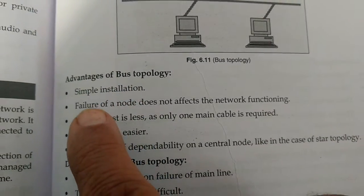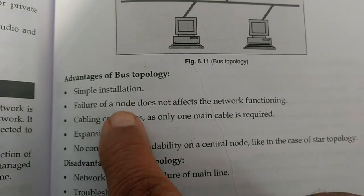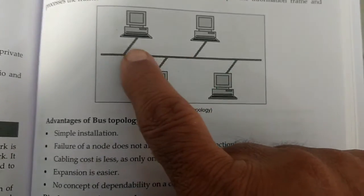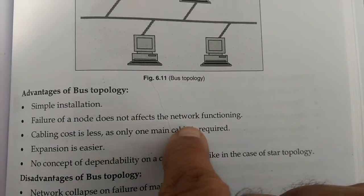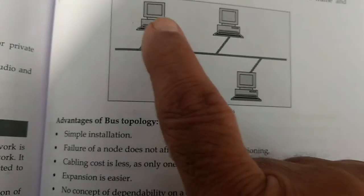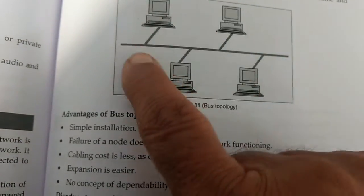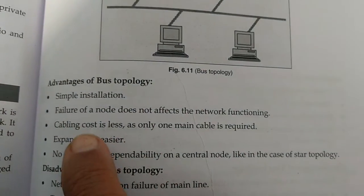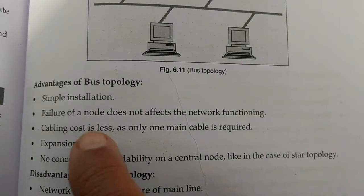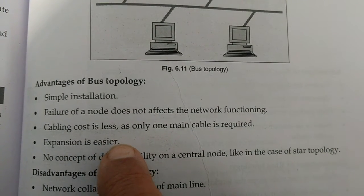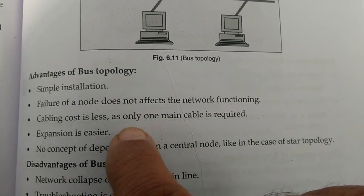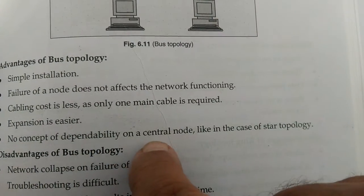The advantages of bus topology are: simple installation; failure of a node does not affect the network functioning — the node is the joint point in the network; cabling cost is less as only one main cable is required; expansion is easier; and there is no concept of dependability on a central node.